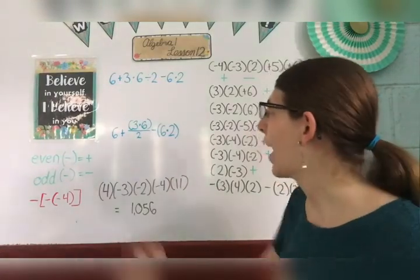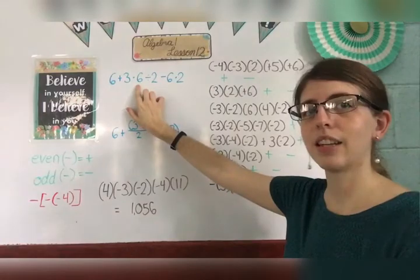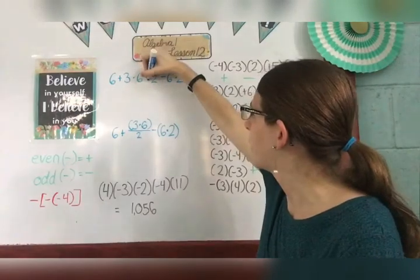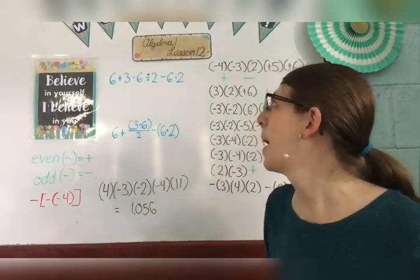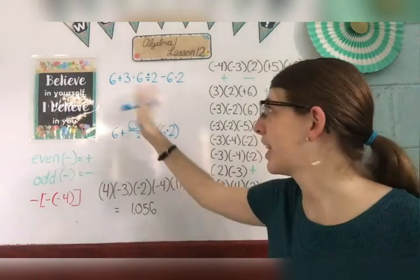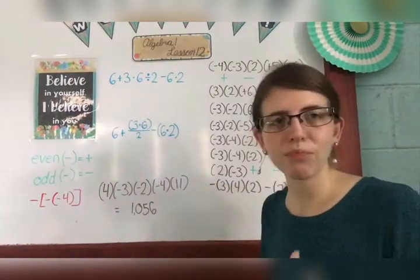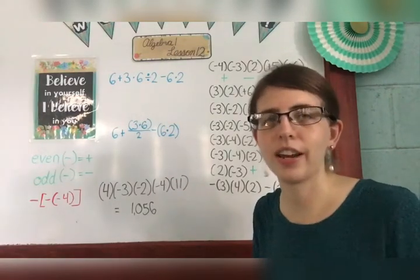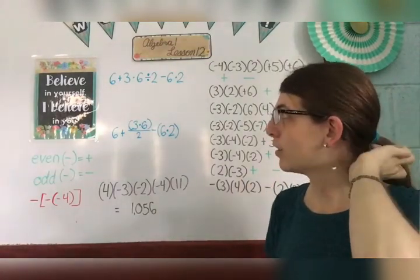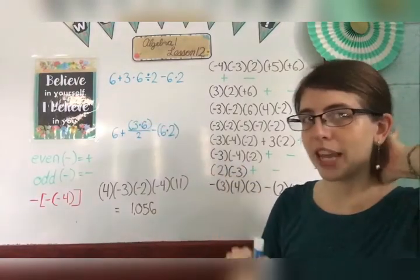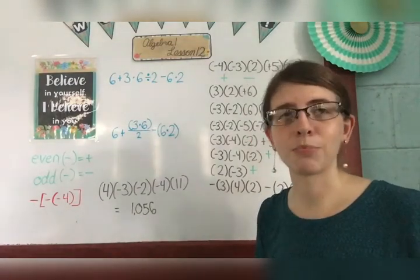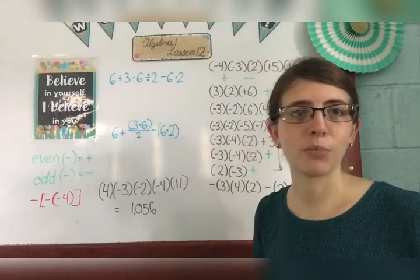So if you look at this problem, I have 6 plus 3 times 6 divided by 2 minus 6 times 2. We know from PEMDAS that we always do parentheses first, but we don't have any in this one. Then exponents — don't have any. Multiplication, division, addition, subtraction. Multiplication and division come at the same time; you just go in order from left to right with multiplication and division. It doesn't really matter too much what order you do it algebraically with addition and subtraction as well as multiplication and division.